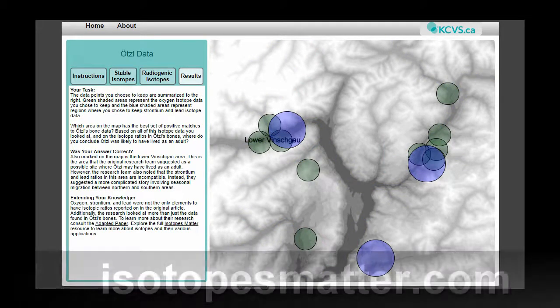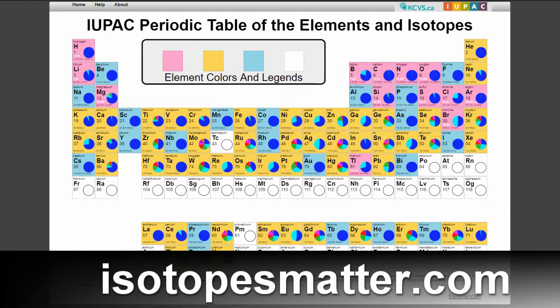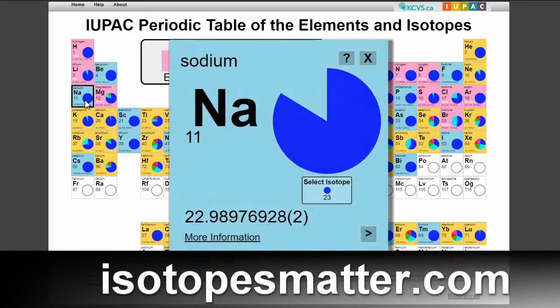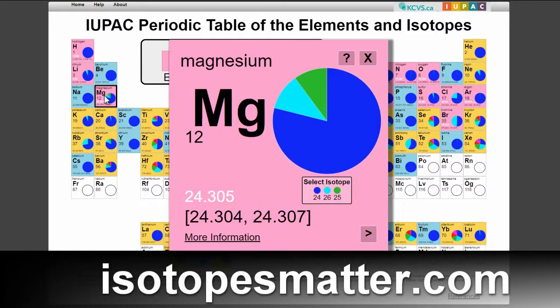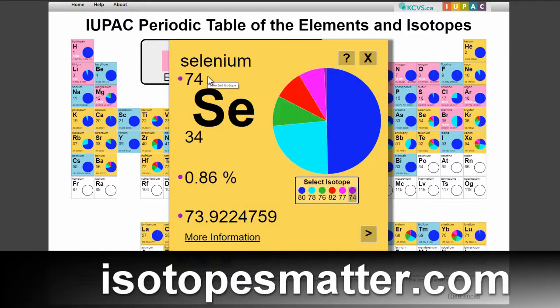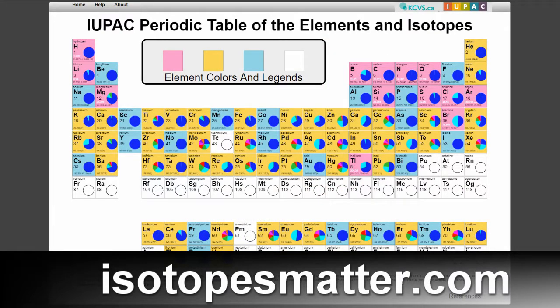Go to isotopesmatter.com to work with the isotopesmatter resources and the interactive IUPAC periodic table of the elements, which provides comprehensive information on all stable and radioactive isotopes of the 118 elements in the periodic table.